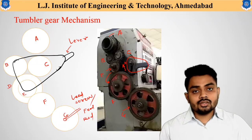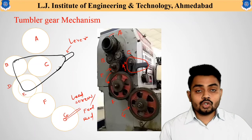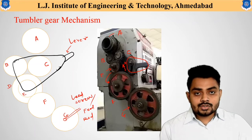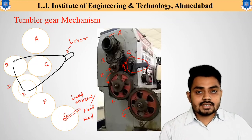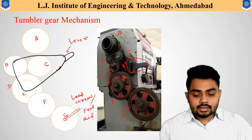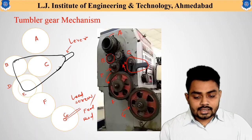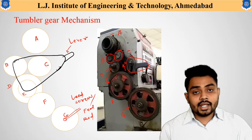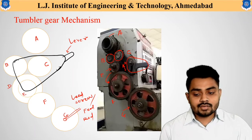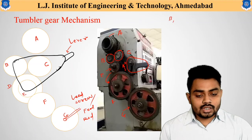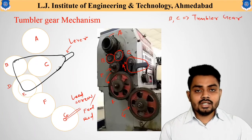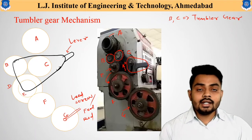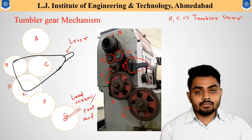Gear G is connected to the lead screw or feed rod, so the rotation of gear G results in the automatic rotation of the lead screw or feed rod. From the main spindle to the lead screw or feed rod, the automated movement is given using this entire gear assembly. Gear B and gear C are the engagement and disengagement gears — these two are called the tumbler gears, and this entire mechanism is called the tumbler gear mechanism.